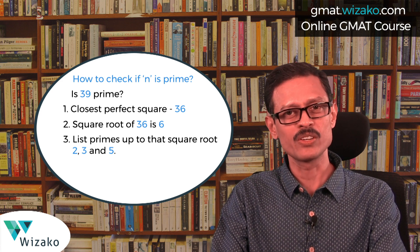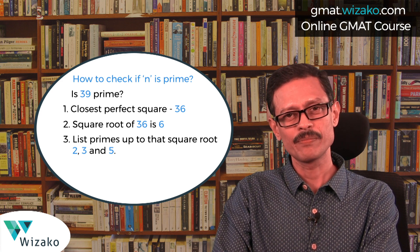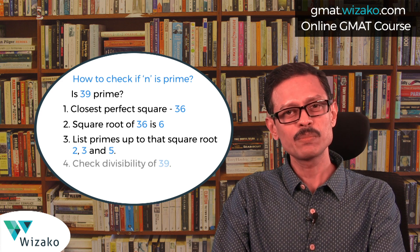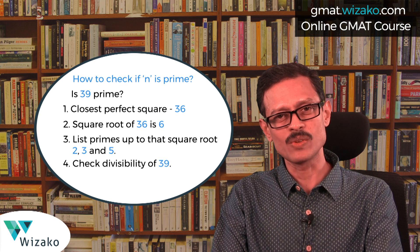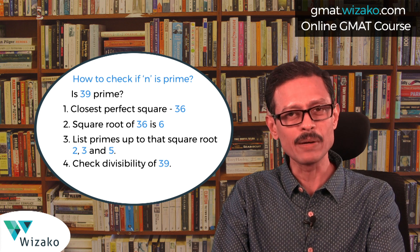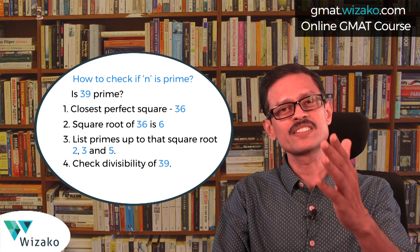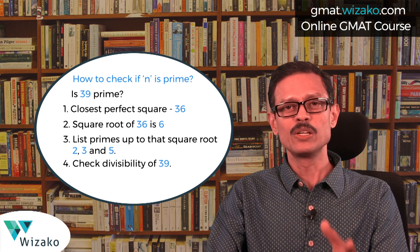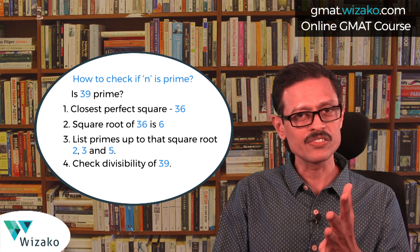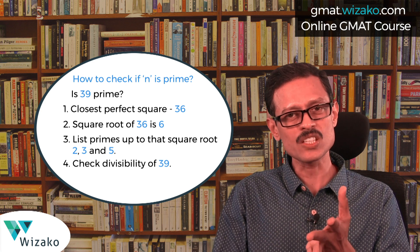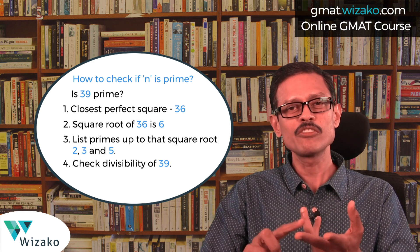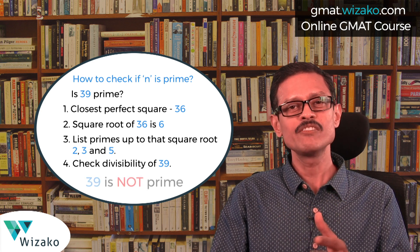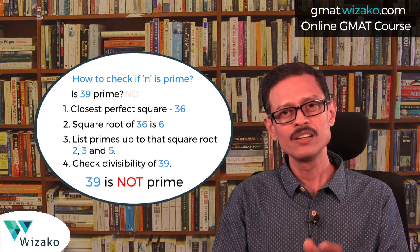2 will not divide 39 because 39 is odd. The sum of digits of 39: 3 plus 9 equals 12, which is divisible by 3, which means 3 divides 39. So we know 1 is a factor of 39, 39 is a factor of 39, and we've found one more factor which is 3 — which means 39 is not prime.